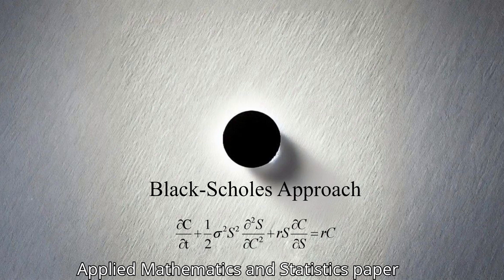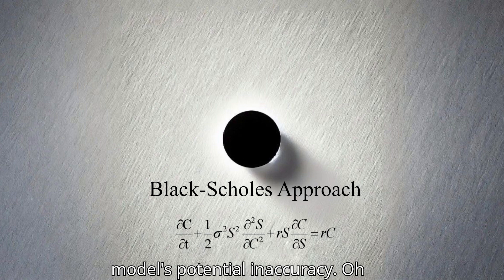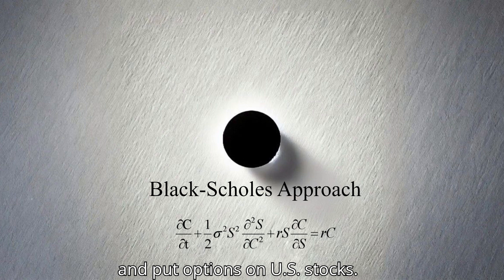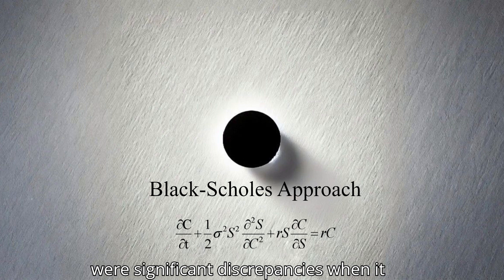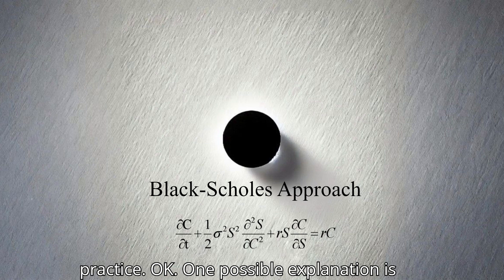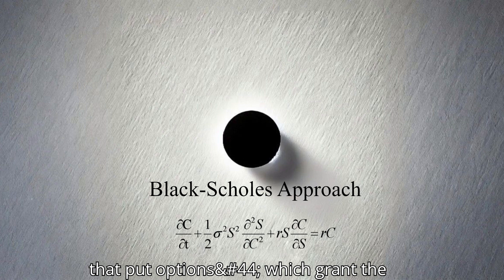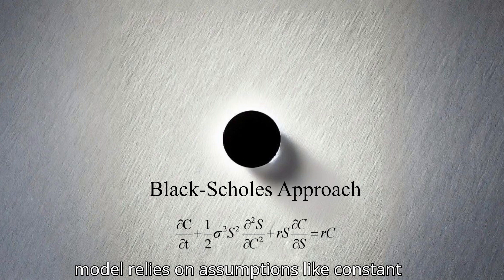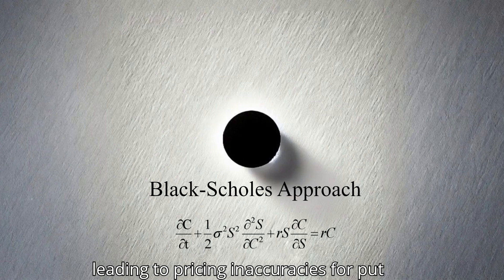It's crucial to remember that it's a tool, and like any tool, it needs to be used appropriately and with an understanding of its limitations. The Frontiers in Applied Mathematics and Statistics paper provided a compelling example of the model's potential inaccuracy when it analyzed actual market data for call and put options on U.S. stocks. They found that while the Black-Scholes model performed relatively well for pricing call options, there were significant discrepancies when it came to put options. What might account for that difference? That's a great question. One possible explanation is that put options, which grant the holder the right to sell an asset, tend to be more sensitive to tail risks or the probability of extreme market movements. Since the Black-Scholes model relies on assumptions like constant volatility, it may not fully capture these tail risks, leading to pricing inaccuracies for put options.